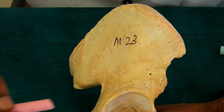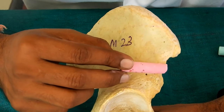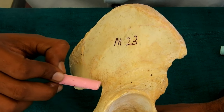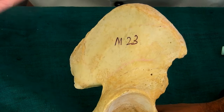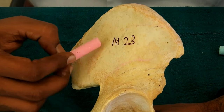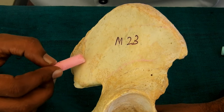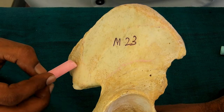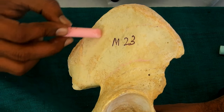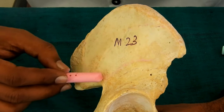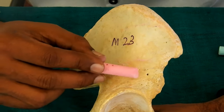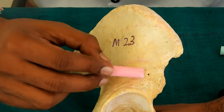The third is the inferior gluteal line, which is ill-defined. It starts above and behind the anterior inferior iliac spine and goes backward and slightly downwards to end at the apex of the greater sciatic notch. These three lines divide the gluteal surface into four areas. Behind the posterior gluteal line, the area gives origin to the gluteus maximus muscle. Between the anterior and posterior gluteal lines, the area gives origin to the gluteus medius muscle. Between the inferior gluteal line and anterior gluteal line gives origin to the gluteus minimus muscle. And below the inferior gluteal line gives origin to the reflected head of the rectus femoris muscle.